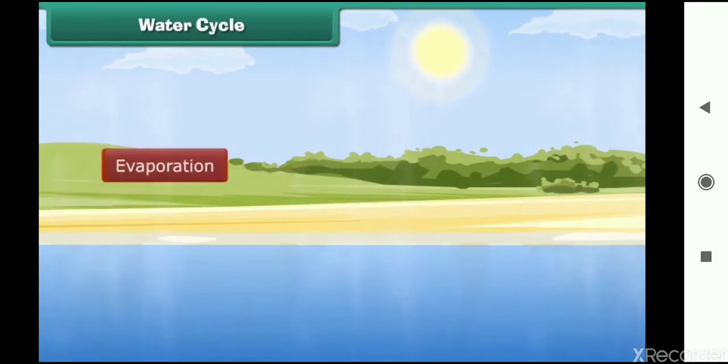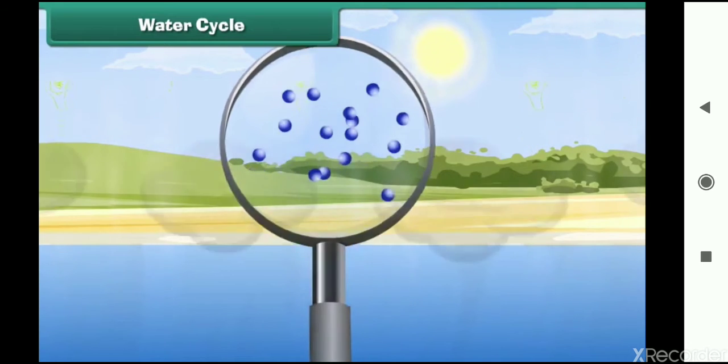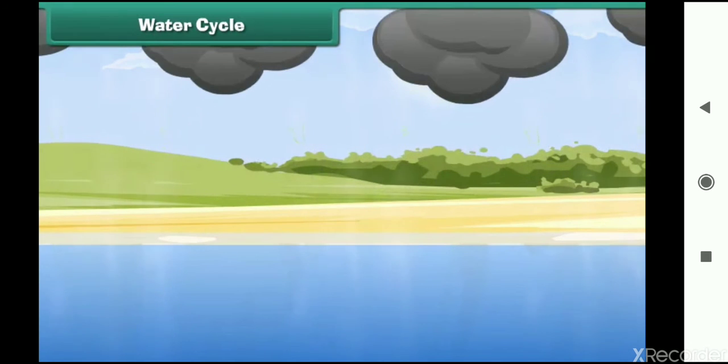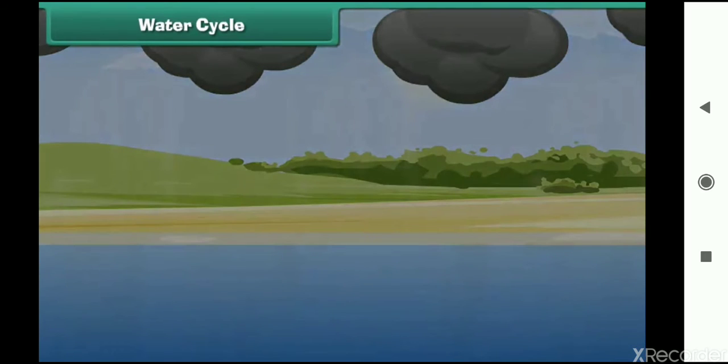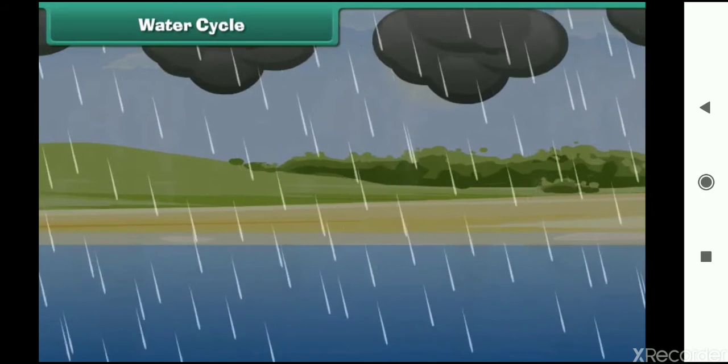This is called evaporation. High up in the atmosphere, water vapors cool down and form clouds. This is called condensation. When the water molecules in clouds begin to collect, they form bigger droplets and fall down as rain, snow, or hail depending upon the temperature. This is called precipitation.